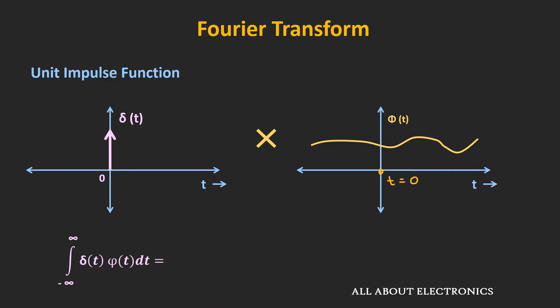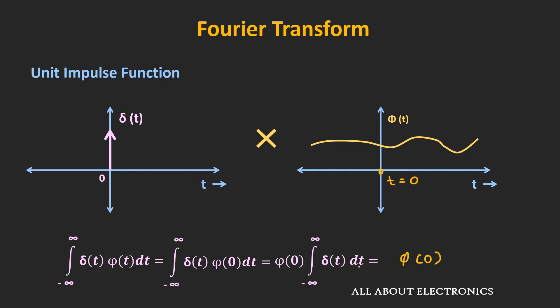So let's see that. We know that when we multiply the function with the unit impulse function, then it is equal to the value of the function at time t is equal to zero times δ(t). Now this φ(0) is constant, so we can take it out. And we know that when we integrate δ(t) from minus infinity to plus infinity, then its value is equal to 1. That means the overall value of this integration is equal to φ(0). That is the sampling property of this unit impulse function.